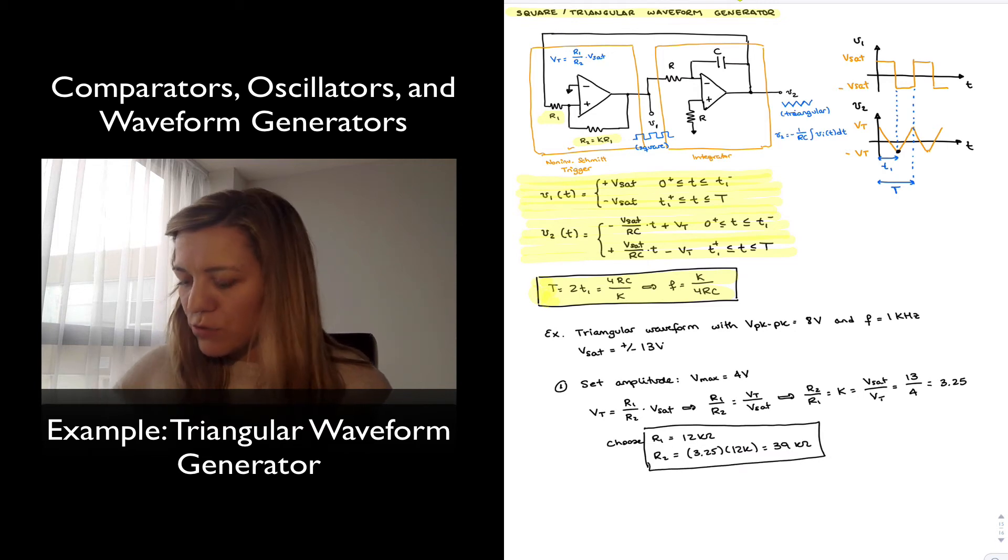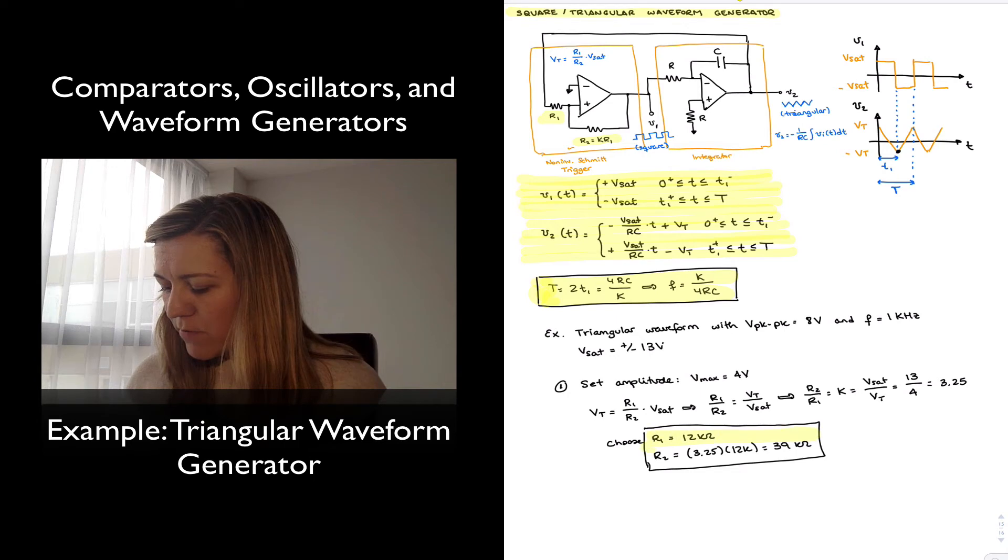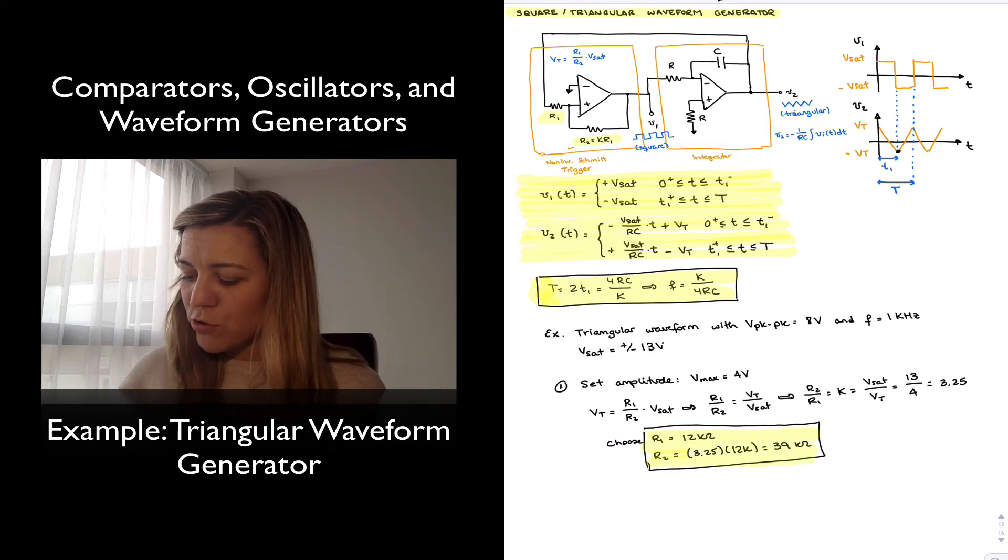So those are my first two values, and then my frequency of oscillation or period of oscillation is going to be determined by RC, the resistor and capacitor, on the integrator side of the circuit.